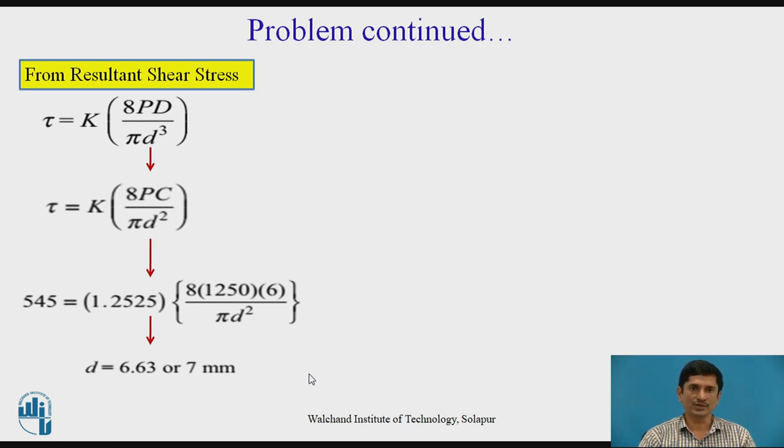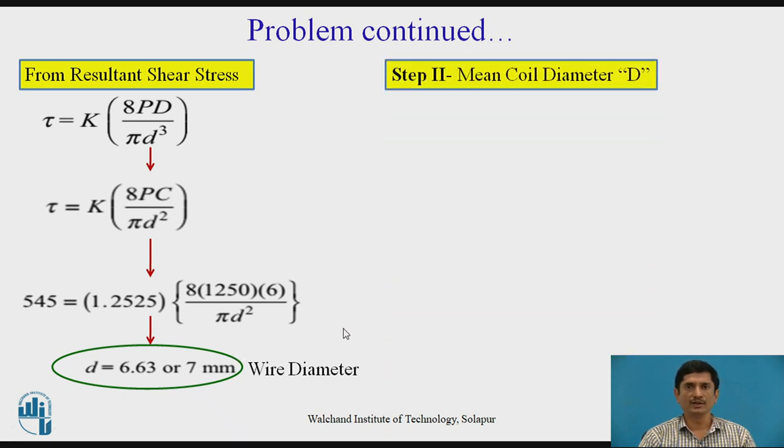Now, we know that wire diameter is 7. Let us proceed to the mean coil diameter. Mean coil diameter is capital D. We know the relation: capital D = C times the wire diameter. We can get this value.